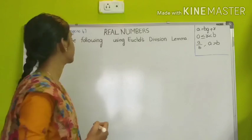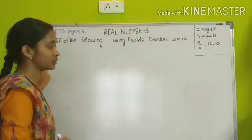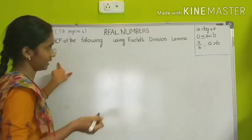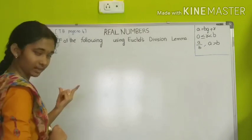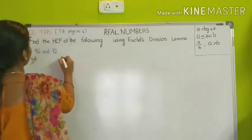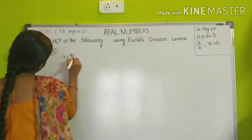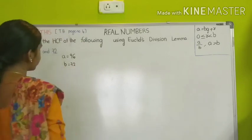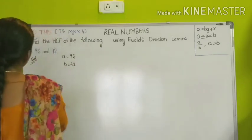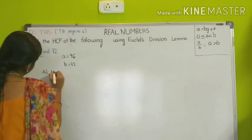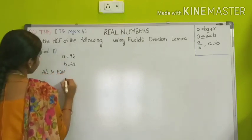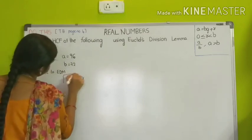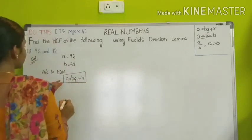Now we are going to solve the second question: find the HCF of 96 and 72. First, we need to know what is A and what is B. Since A is always greater than B, the greater number becomes A. The greater number here is 96. So A is equal to 96 and B is equal to 72. We write the Euclid's division lemma equation: A is equal to B into Q plus R.